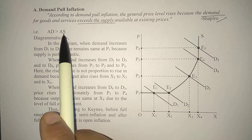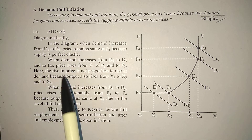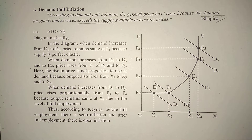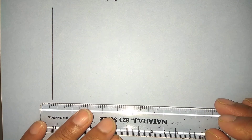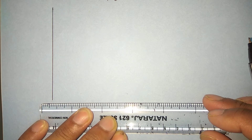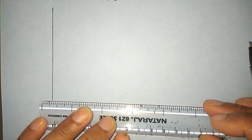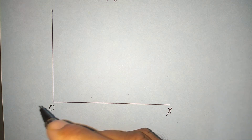When aggregate demand is greater than aggregate supply, that is inflation. Diagrammatically we can show demand-pull inflation with this diagram. Let us draw this diagram again step by step. On the horizontal axis we take commodity X, and on the vertical axis its price.